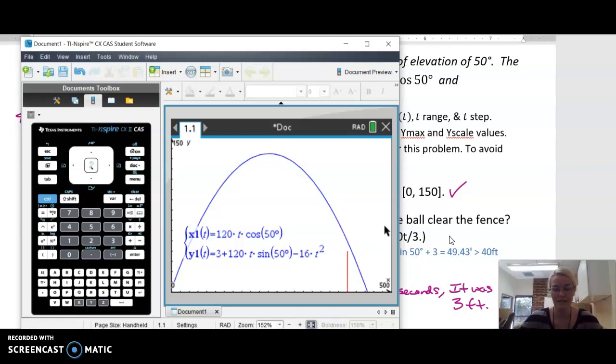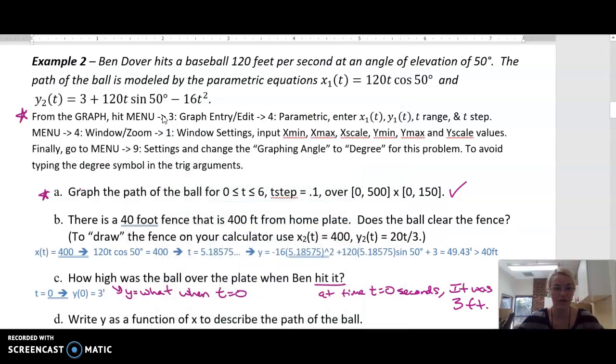How could we figure this out algebraically? To figure out algebraically if it will clear the fence, you want to figure out when X is 400, when 400 equals 120t cos(50°). Can you figure out at what time in the path it reaches 400 feet horizontally? Solve this for T. T is going to equal 400 divided by 120 times cosine of 50 degrees. You can use your calculator to do that.